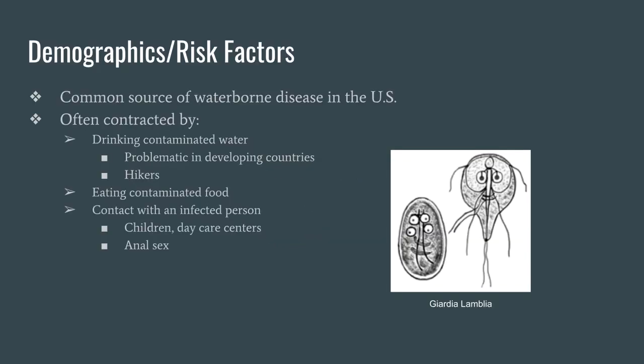Giardia is an extremely prevalent parasite and one of the most common causes of waterborne disease in the US. Giardia is most often contracted by drinking contaminated water or by consuming food irrigated with infective water. This is particularly the case for hikers who can easily become infected with the parasite by drinking directly from a stream or similar source.